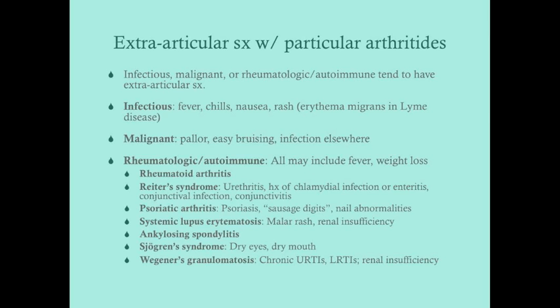Systemic lupus erythematosus presents with the malar rash over the cheeks and renal insufficiency. Ankylosing spondylitis presents with low back pain and fever. Sjögren's syndrome presents with dry eyes and dry mouth accompanying joint pain. Wegener's granulomatosis is associated with chronic upper respiratory tract infections and can even cause rupture of the nasal septum. Many of these conditions may present with their extra-articular symptoms more prominently than the arthritis itself.